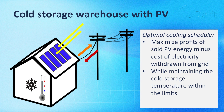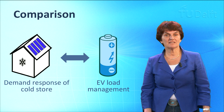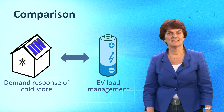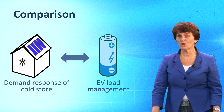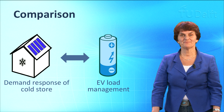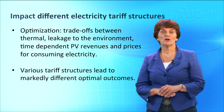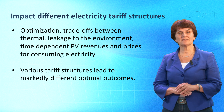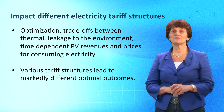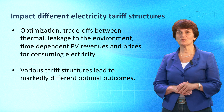There is a clear similarity between EV load management and demand response of a cold store. An approximation of temperature dynamics of the cold store is similar to the description of energy content of an EV battery in a car. Instead of electrochemical energy stored in a battery, we have here heat stored in the cold store warehouse. It is interesting to investigate the influence of different electricity tariff structures on the optimal cooling schedule and to optimize this. The cooling trajectories can be understood in terms of trade-offs — in this case, trade-offs between thermal leakage to the environment, time-dependent PV revenues, and prices for consuming electricity.